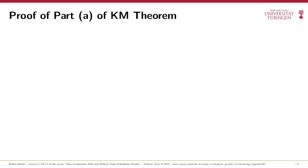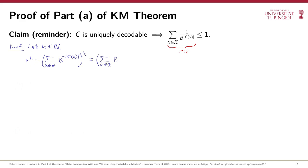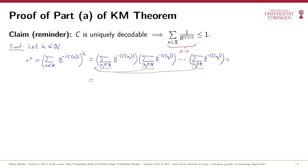Let's use this lemma to prove Part A of the Kraft-McMillan theorem. Part A claims that a uniquely decodable b-ary symbol code satisfies the Kraft inequality. We refer to the left-hand side of the inequality as r, and consider the quantity r^k for an arbitrary positive integer k. Writing out the power of k as an explicit product of k identical factors with summation variables x_1 to x_k, we apply the distributive property and pull all sums to the front, rewriting the expression as b raised to the negative sum of codeword lengths.